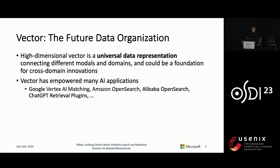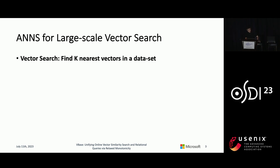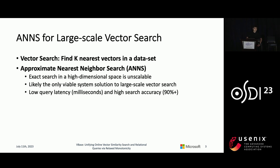In fact, vectors are already powering many AI applications today. Examples include Google Vertex AI matching, Amazon Open Search, Alibaba Open Search, and the latest popular example of ChatGPT retrieval plug-ins. To manage this large and increasing amount of large-scale vector data sets, ANN systems have become the go-to system for large-scale vector search queries. Specifically, a vector search query often finds K nearest vectors to a query vector.